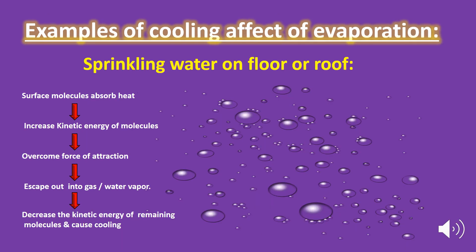Sprinkling water on the floor or on the roof during the summer causes a cooling effect. This is because the surface water molecules absorb heat from the surroundings and escape to the atmosphere. As a result, the average kinetic energy of the remaining molecules falls, and the remaining molecules draw the necessary heat from their surroundings to evaporate. As a result, the surroundings — that is, the floor, ground, or roof — get cooled.